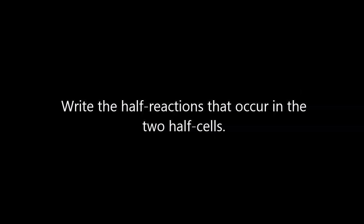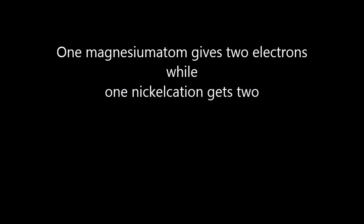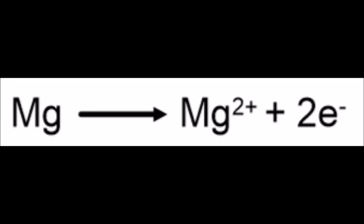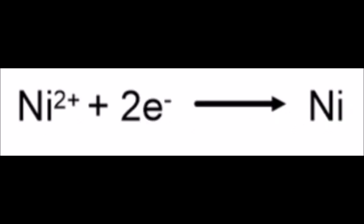Write the half-cell reactions that occur in the two half-cells. One magnesium atom loses two electrons while one nickel cation gains two electrons. Magnesium becomes a cation and the nickel cation becomes an atom.